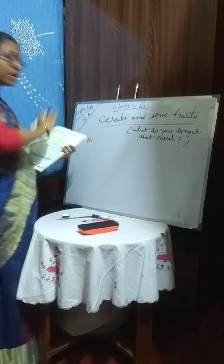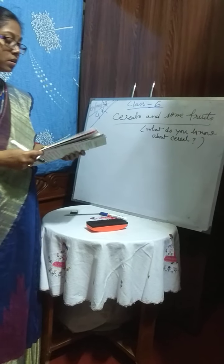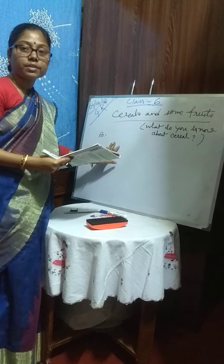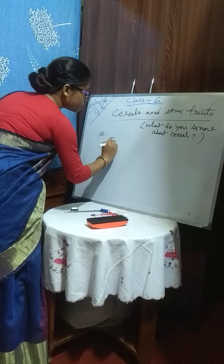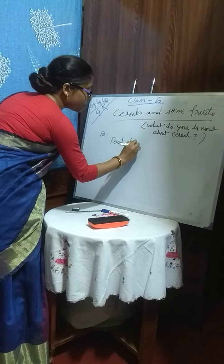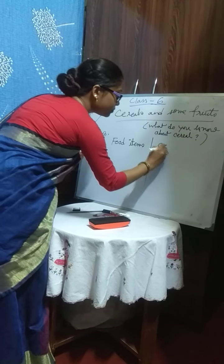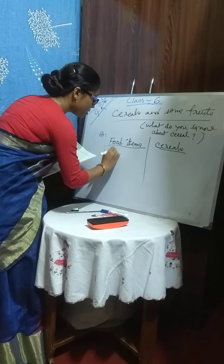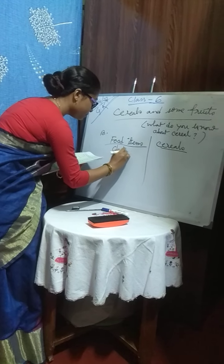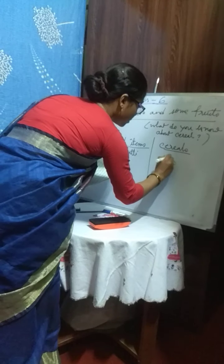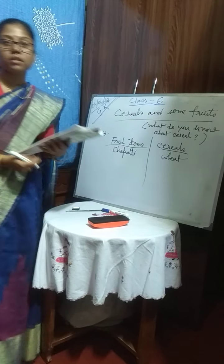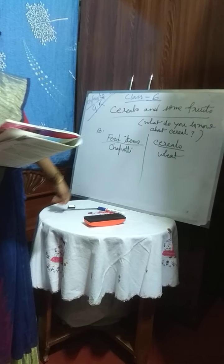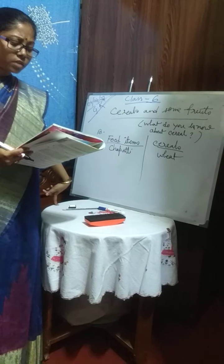Now for part B, I am writing a straight match. So chapati is a food item. This side I will write the food items that can be prepared with the cereals. Chapati is very easy — we know it is from wheat; we make chapatis from wheat. So food item is chapati and cereal is wheat. Pasta — that is also from wheat.